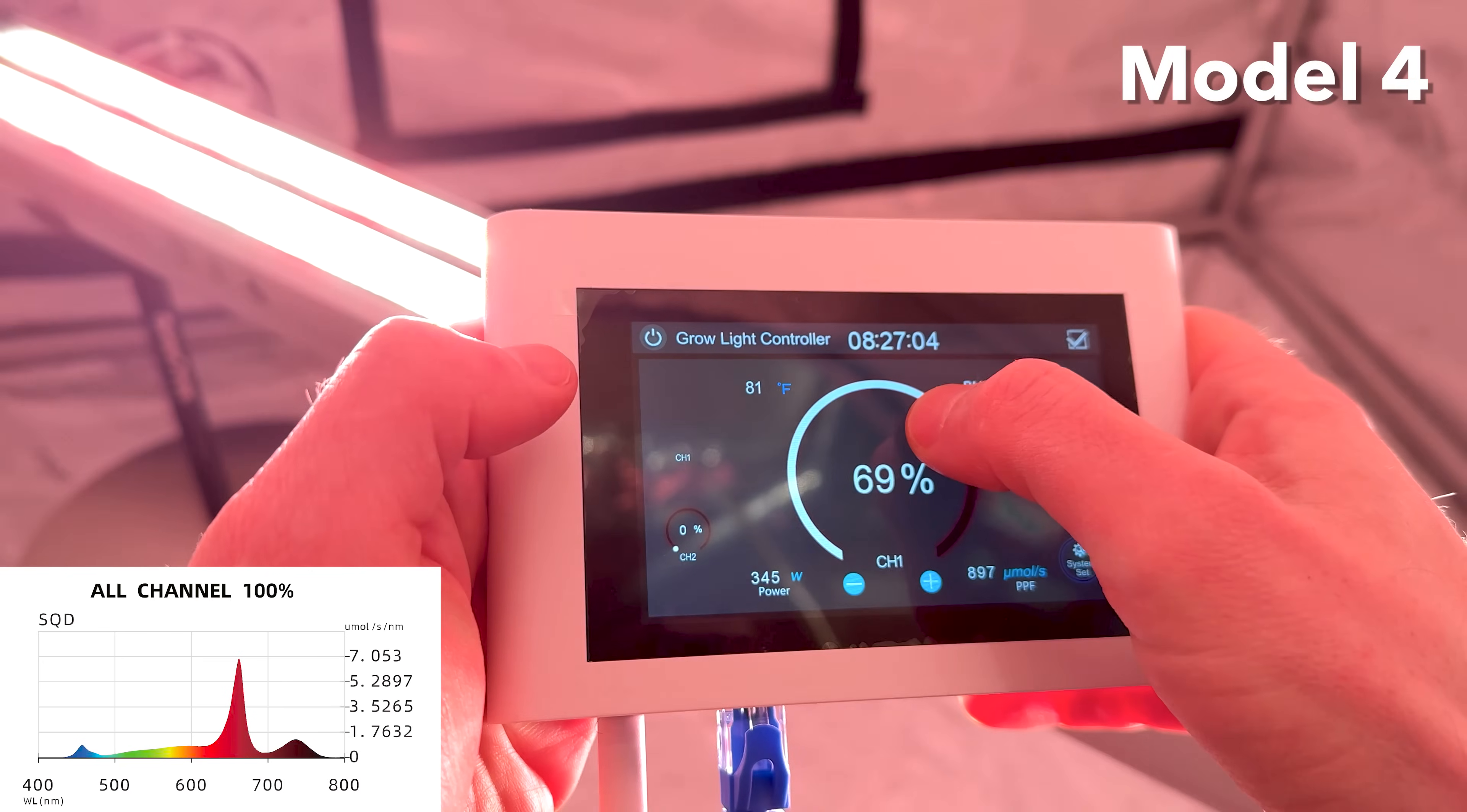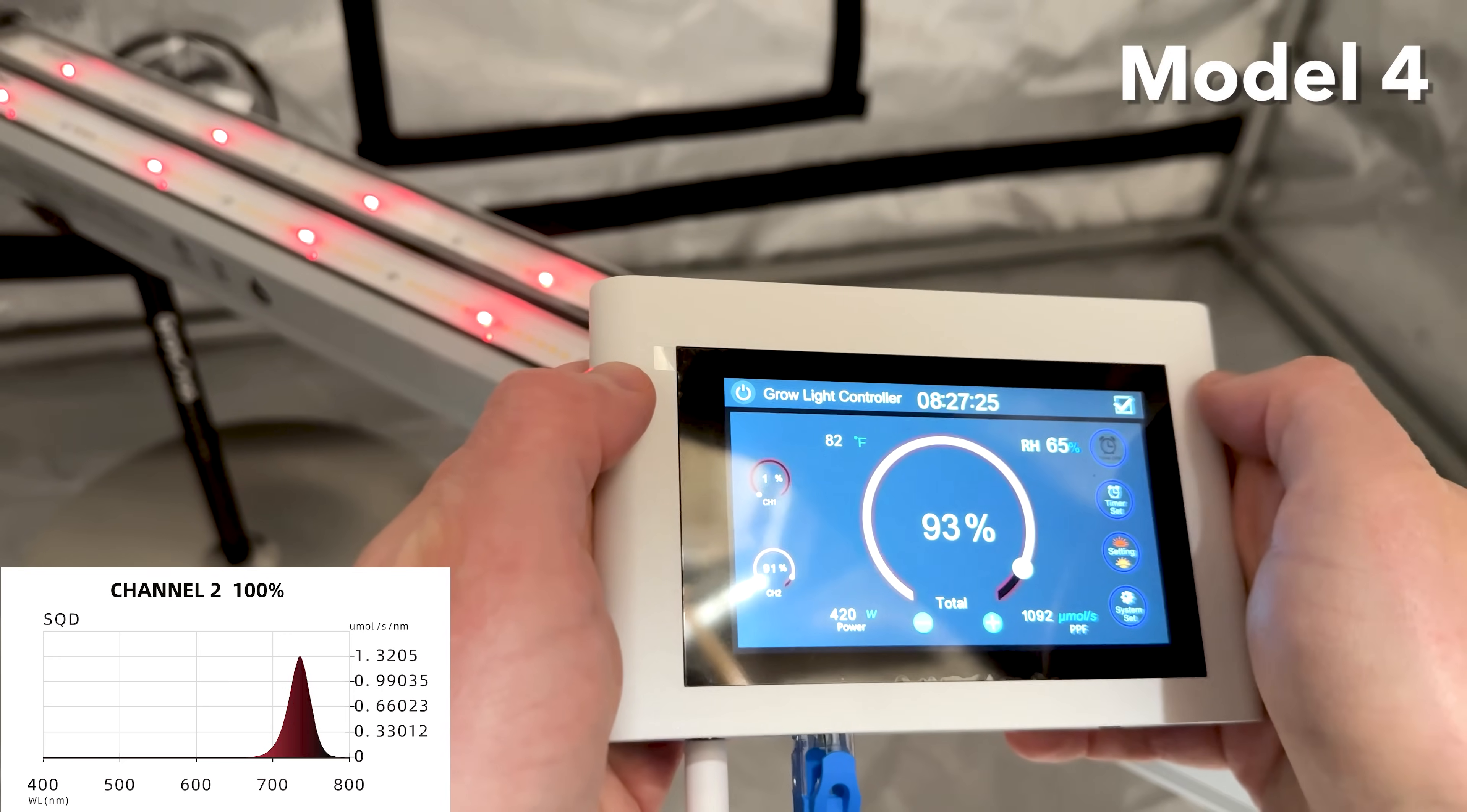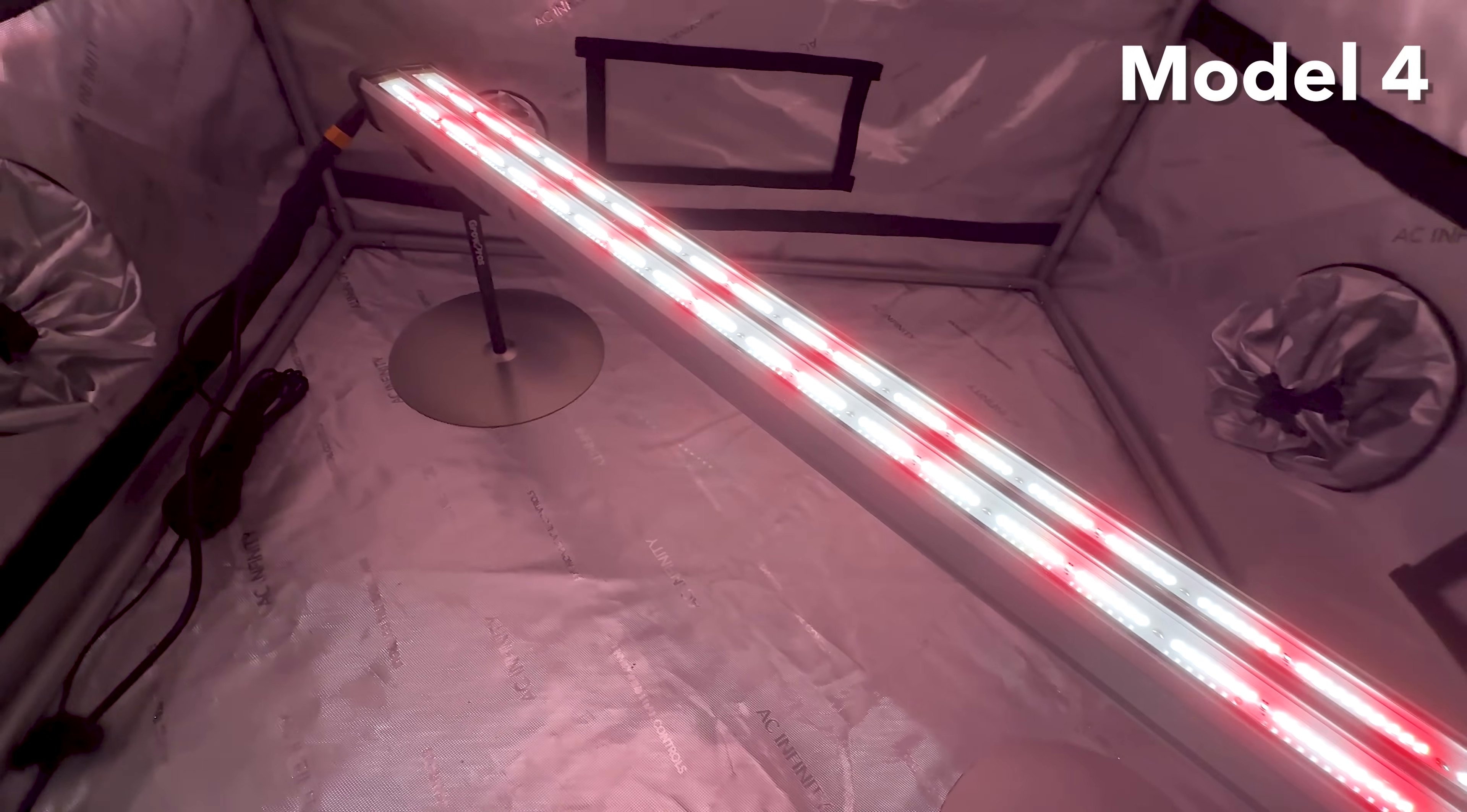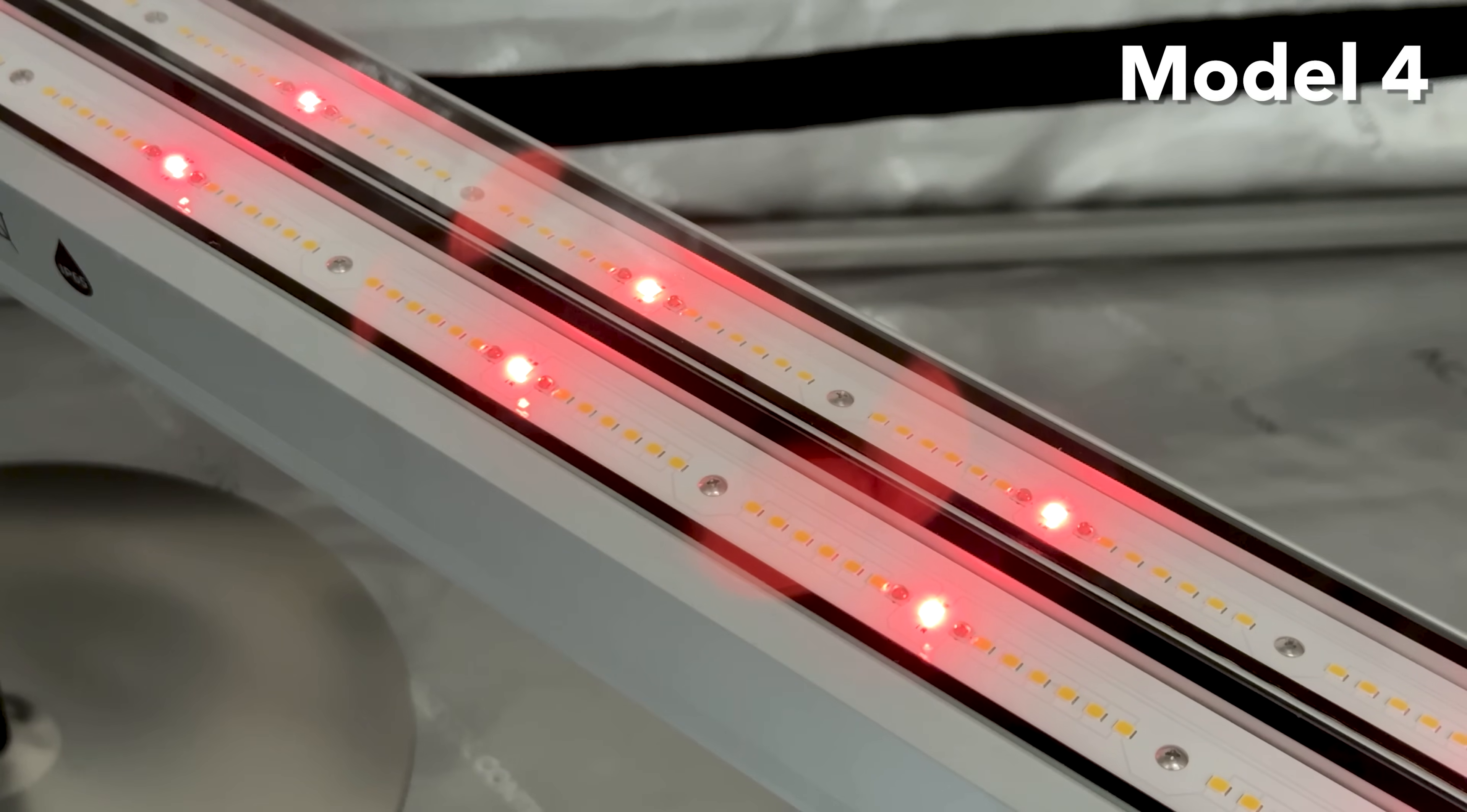The Model 4 features dual channels with a 125 watt channel dedicated to red and white light and a 25 watt channel for independent IR. The Model 4 is ideal for flowering stages with its focus on red and IR light for larger buds and faster flowering. This model's red and white spectrum boosts overall flower size while the IR channel triggers the Emerson effect to accelerate the vegetative to flowering transition, potentially shortening flowering time by 1 to 2 weeks.